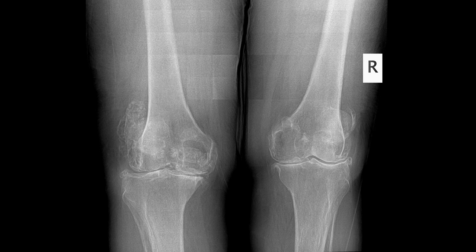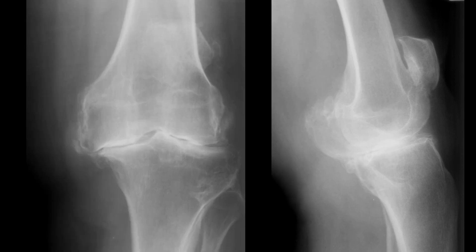This individual has moderate to severe loss of the joint spaces bilaterally, as well as significant osteophyte formation, alteration to the joints, intra-articular loose body formation, and patellofemoral osteophyte formation. This patient has tricompartmental degenerative joint disease, meaning it's within the femoral tibial joint spaces as well as the patellofemoral joint spaces.